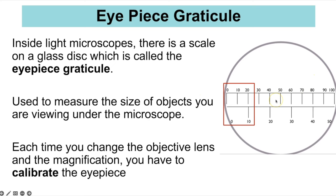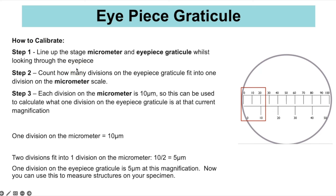To calibrate: place the stage micrometer on the stage of the microscope and line it up with the eyepiece graticule so that when you look through the eyepiece you see two rulers lined up. Then count how many divisions on the eyepiece graticule fit into one division on the stage micrometer. Each division on the stage micrometer is a known distance — 10 micrometres. This tells you what one division on the eyepiece graticule is worth at that magnification.